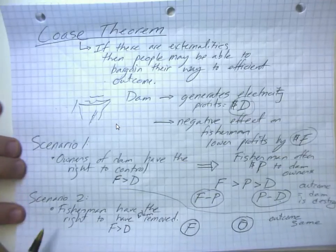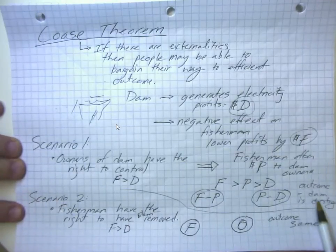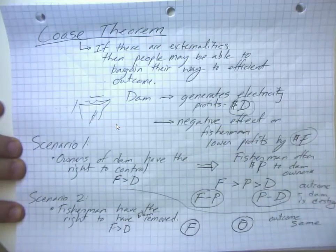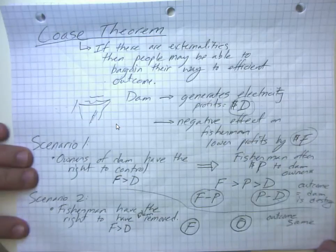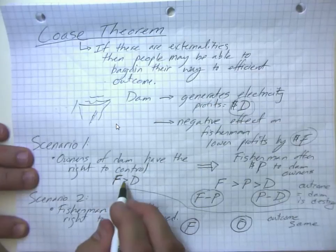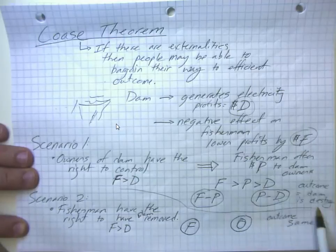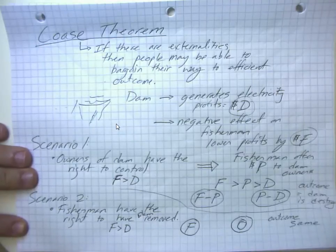So what we can see here is that who owns the dam does not affect whether or not we get to that outcome of the dam being destroyed. And given that F is greater than D, given that the fish are worth more than the dam, the dam being destroyed is the efficient thing to do.